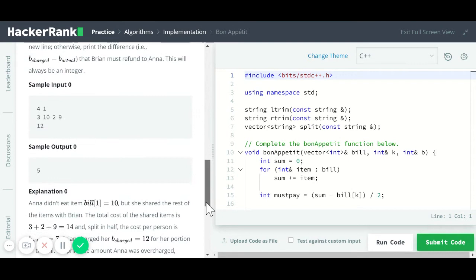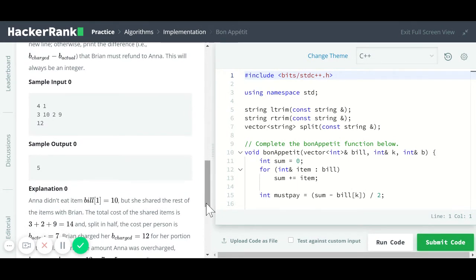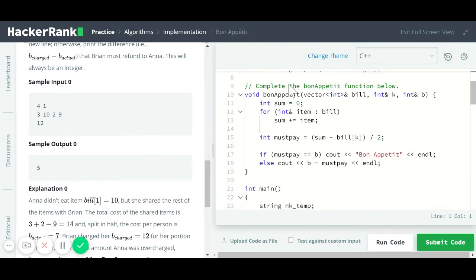So in this HackerRank challenge, what we need to do is figure out what is the bill for Anna, and then verify if whatever amount that she's asked to pay by Brian is correct. If it is correct, then we print out Bon Appetit, and if it's not, then we just print out the change that Brian has to give her.